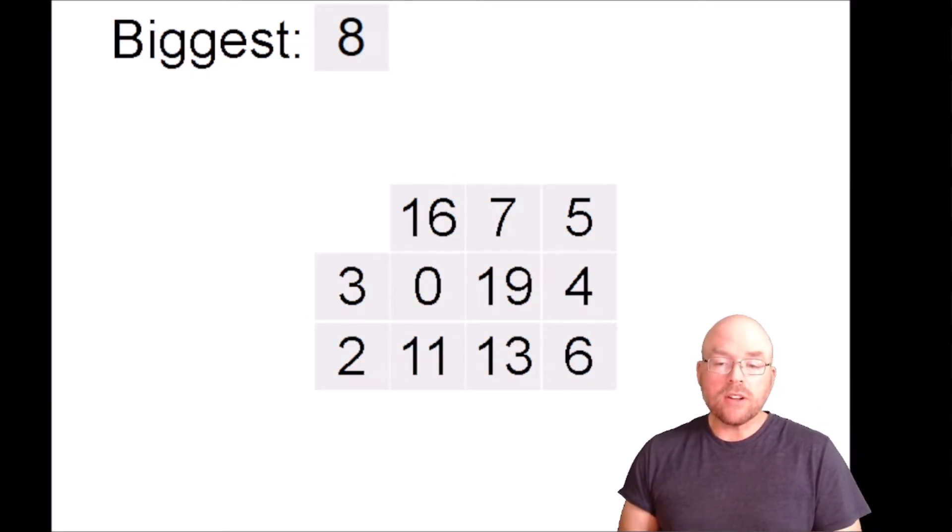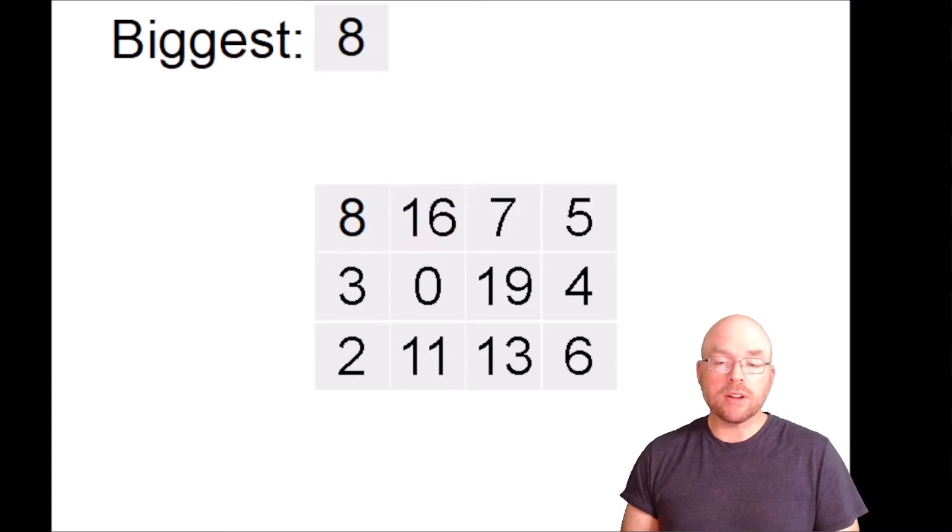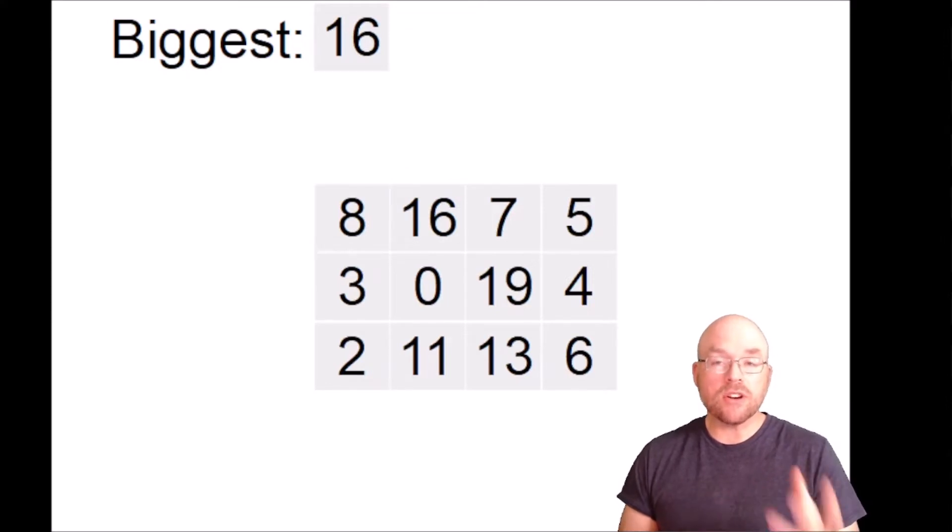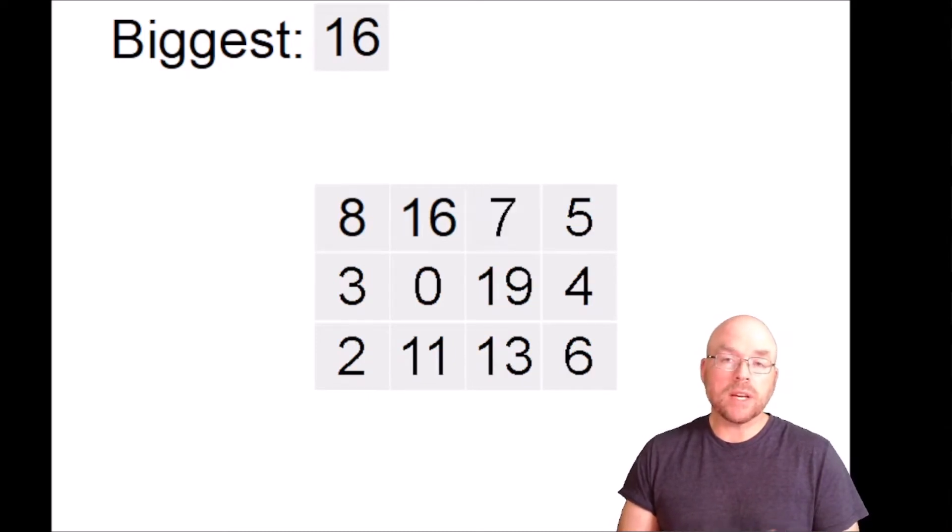Once we've assigned eight and we're assuming that's our biggest, then we'll take a look at that first number in the first row. Is that bigger than what's in biggest? No, it's not. So then we'll move to the next number in that row, 16. Is 16 bigger than what's in biggest? Yes, it is. So we'll replace what was in biggest with 16. That's our new biggest. We'll look at the seven. Is that bigger than what's in biggest? No. Let's move on to five. Is that bigger? No. We've now found the biggest value in that first row.